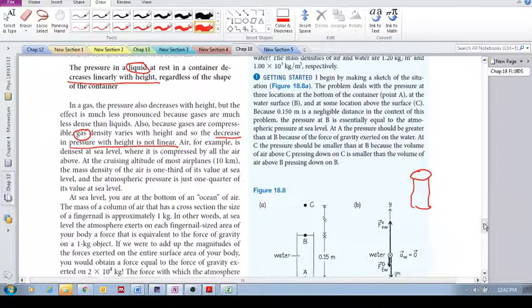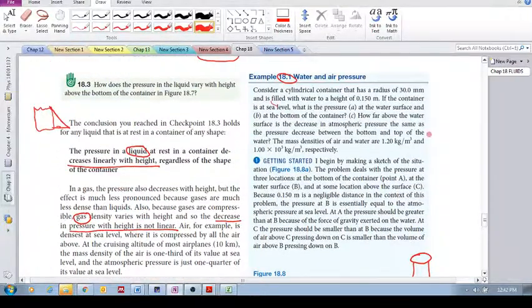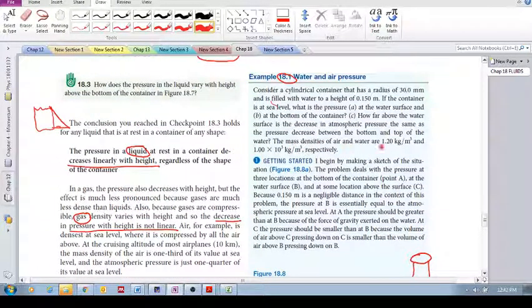Alright, so how do we tackle this? What else do they give us? So, mass densities of air and water are 1.2, that's for air, kilogram per meter cubed, that's a density, and 1,000 kilogram per meter cubed. So that's what's given.